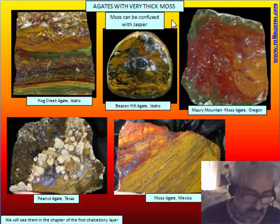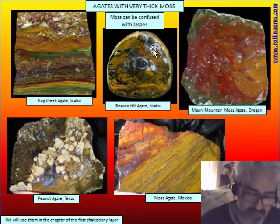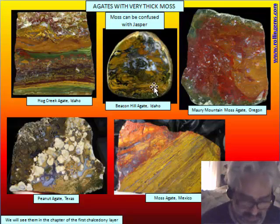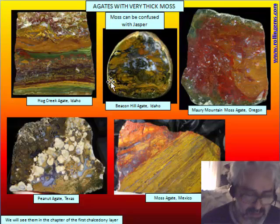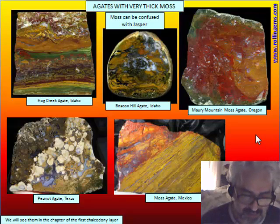We can also call jasperagate some kinds of agate that we know are agate — for example, Beconil is from a deposit where nodular banded agate are very common. But some nodules are so filled by moss that they can result in material that looks more like a jasper than an agate. This is true because moss and jasper are very similar materials.